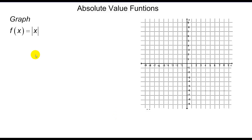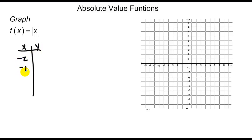For this first graph, we're going to graph the absolute value of x. I don't really need a calculator to do this, so I'm just going to grind this out. I've got a little x-y chart: x values of -2, -1, 0, 1, 2. The absolute value of -2 is 2, -1 is 1, 0 is 0, 1 is 1, 2 is 2. We plot those points.